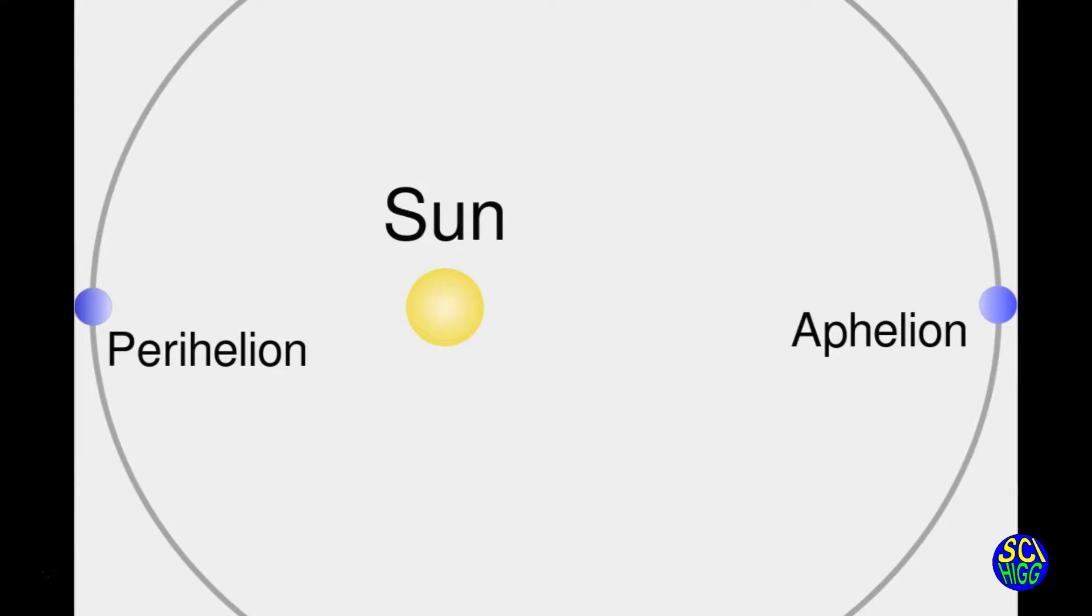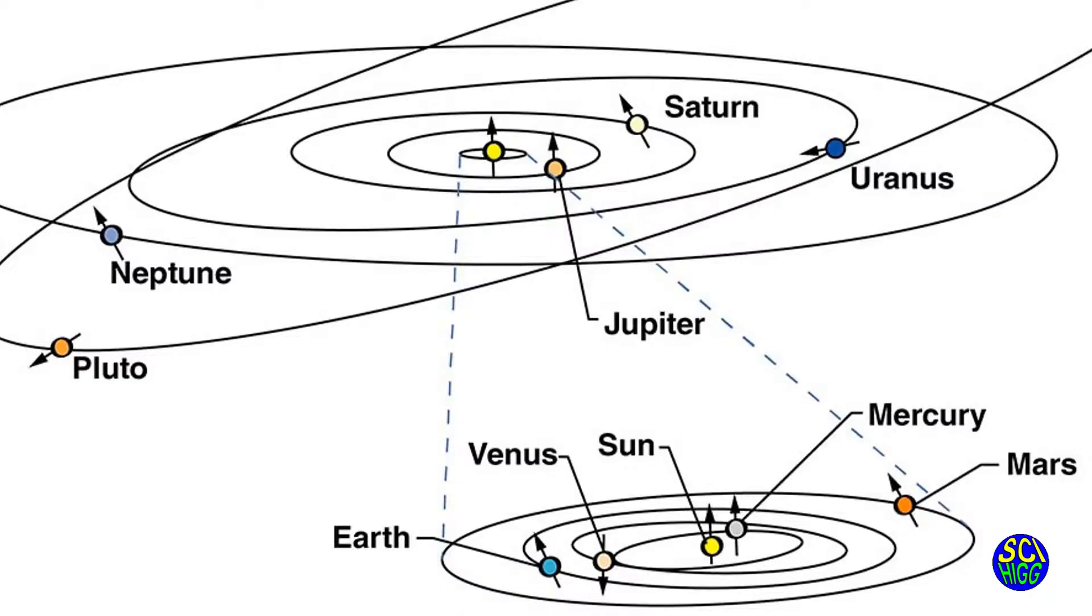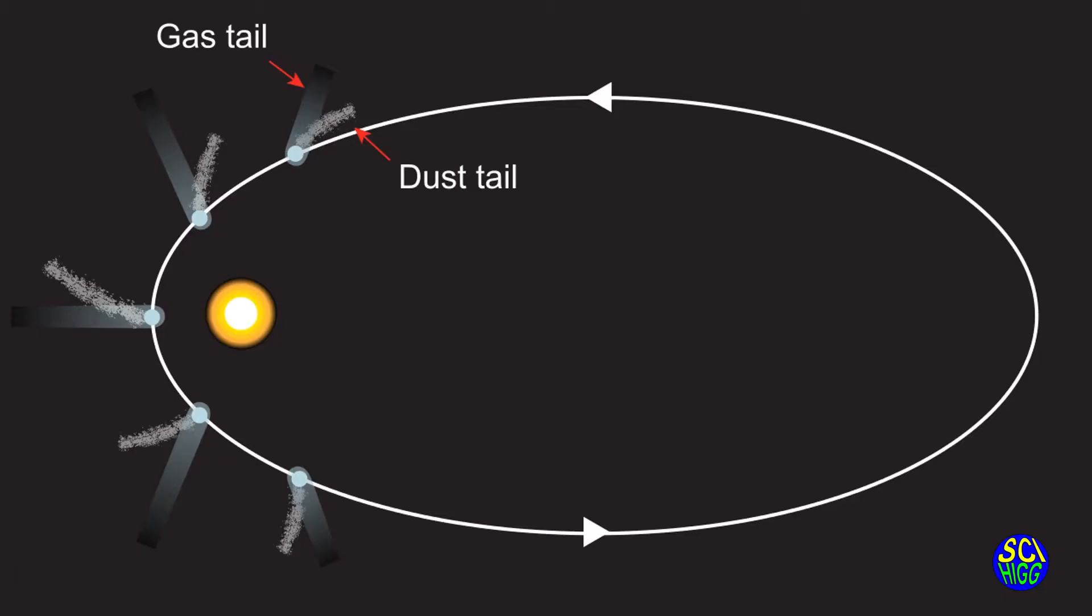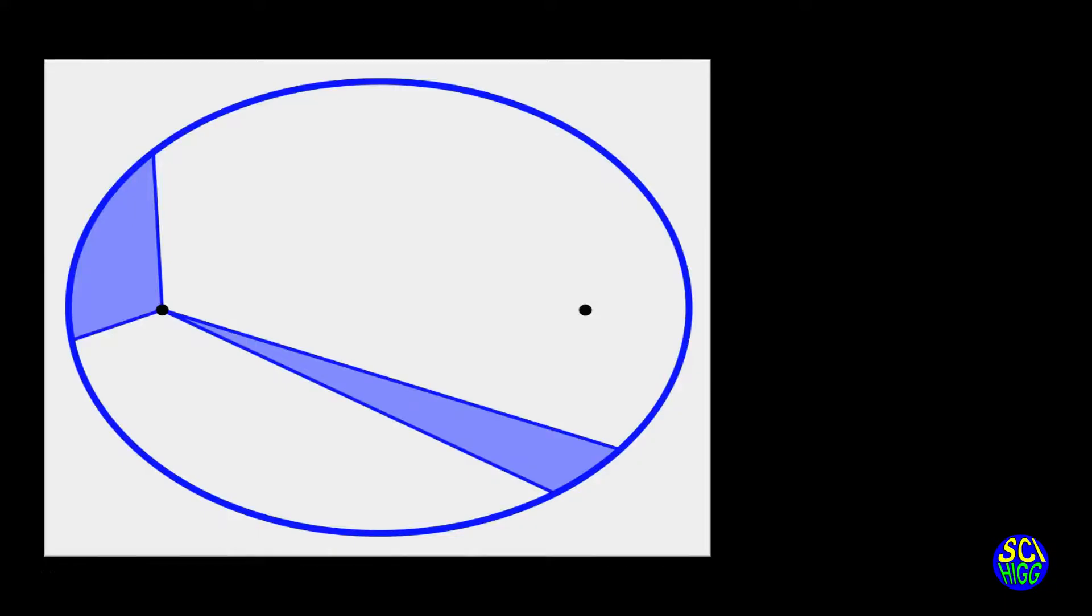Now there are some fancy words that describe this nearest point and this furthest point. But for the purposes of the course, you don't really need to know they exist, but you might hear Perihelion or Aphelion describing the closest and furthest points. Kepler's second law is most visible in the object that travels farther out into the solar system, like comets that will typically go way out past the orbit of Neptune.